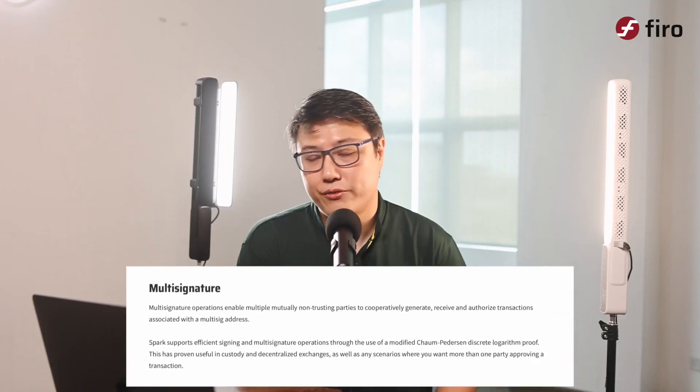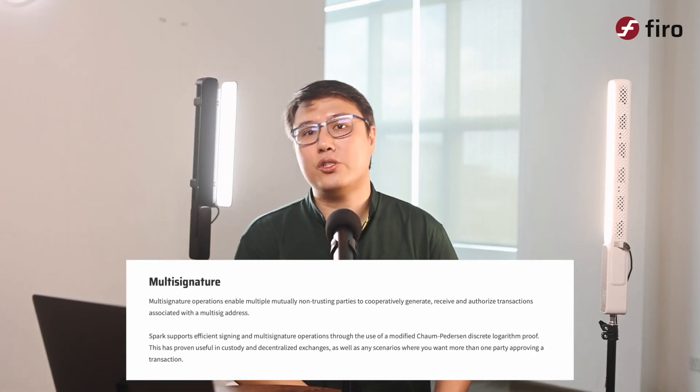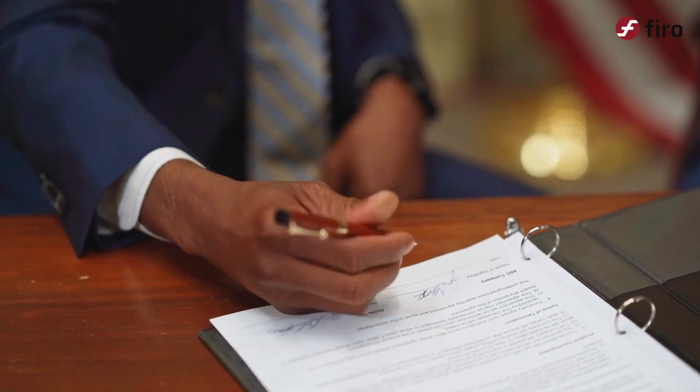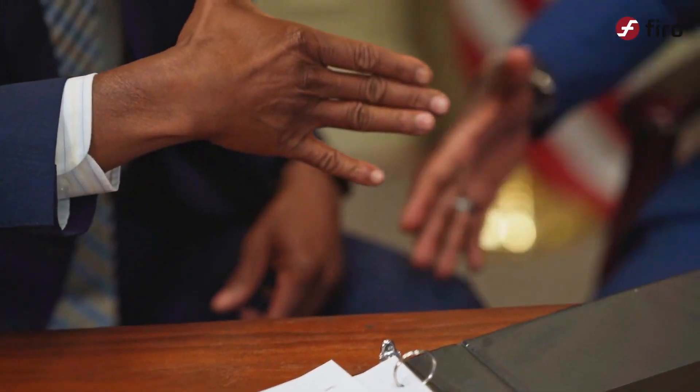Spark addresses also allow efficient multi-sig. Multi-sig allows you to share access to a particular wallet or address. For example, as a member of a company, you can say you only want two out of three directors to approve a particular outgoing transaction. We can do that. And best of all, on the blockchain, people cannot tell that this address is a multi-sig address — it just looks like any other address. You can't tell if it's controlled by one person or ten. Spark allows very, very flexible multi-sig addresses.